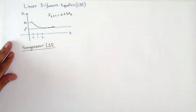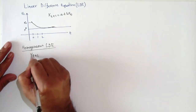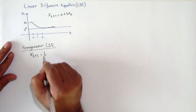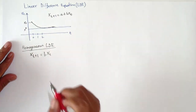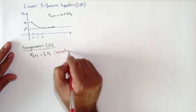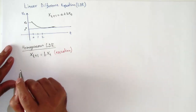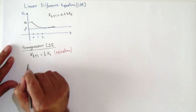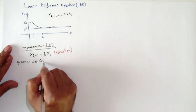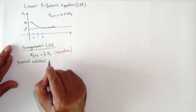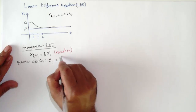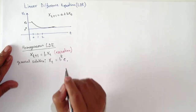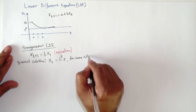There are two types of linear difference equations. The first is the homogeneous linear difference equation, where x_{t+1} equals b*x_t. The constant term a does not appear in this equation. A general solution can be found by backward substitution and written as x_t equals b^t times c, for some arbitrary constant c in the real line.